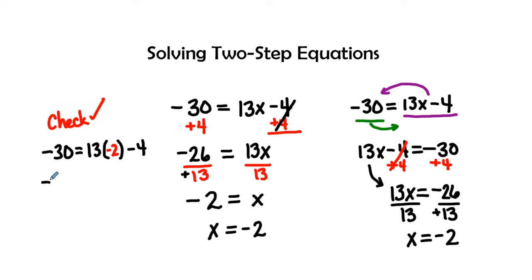So we have negative 30 on the left-hand side. 13 times the negative 2 is negative 26 minus 4. Negative 30 is going to equal negative 26 and negative 4. Now when I'm adding integers, I need to keep the sign. I'm going to take the sign before the term.